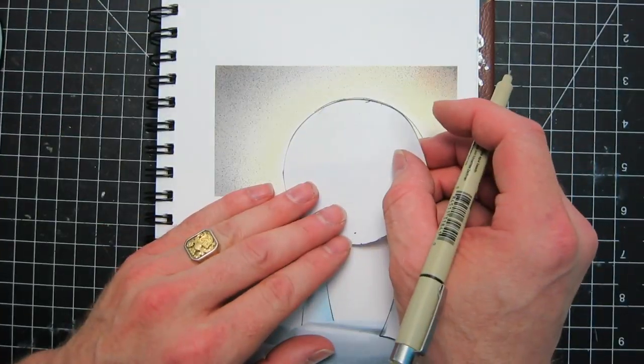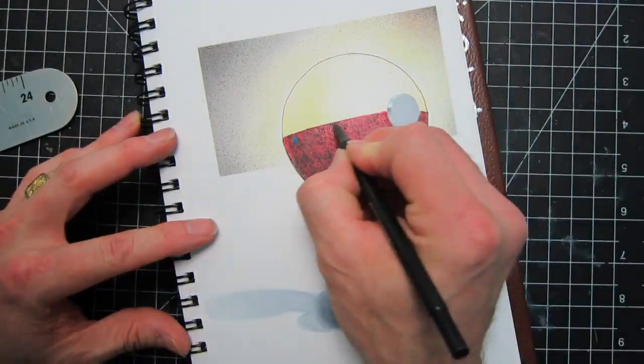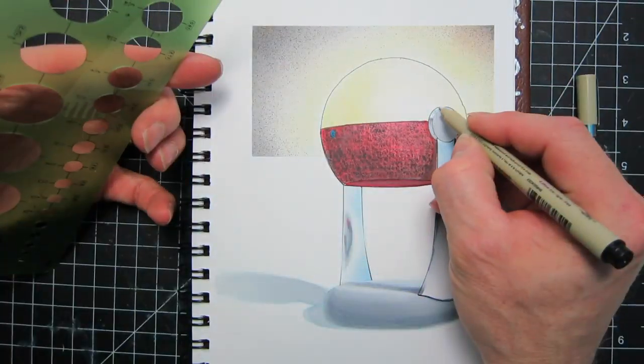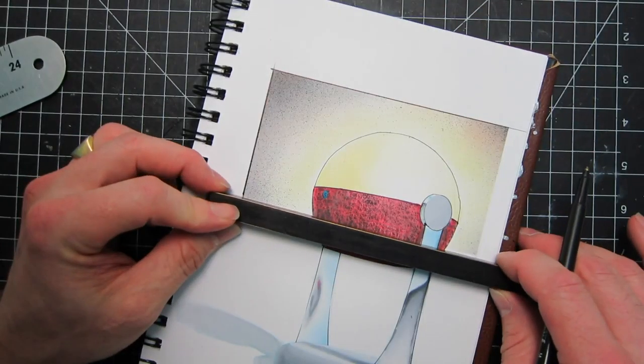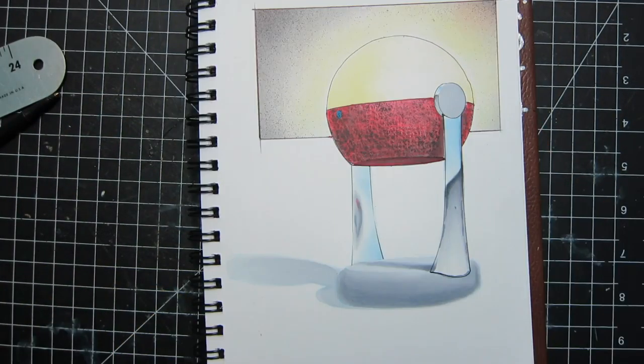Next and last but not least I'm adding in the line weight so I'm darkening up the outline of the object to give it a little bit of contrast and give it some punch. This is where the rendering really starts to sing and I paid a lot of attention to the line weight.